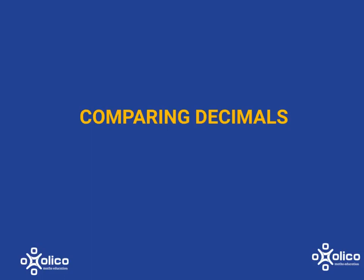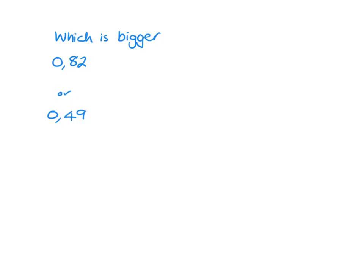We're going to have a look at how we can tell which decimal is bigger or smaller. Imagine we are asked, which is bigger, 0.82 or 0.49? Now, it might be immediately obvious to you, but just stick with me because it's really important to understand this well.